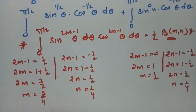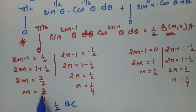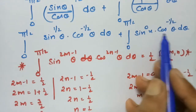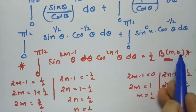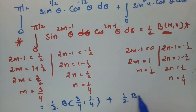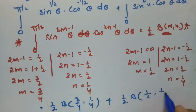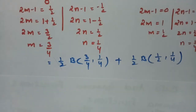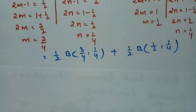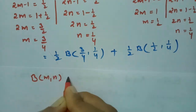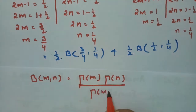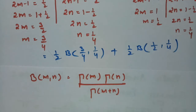Substituting into the formula, the first integral gives half times β(3/4, 1/4), and the second integral gives half times β(1/2, 1/4). Now I am going to use the important relation between the beta and gamma functions: β(m, n) = Γ(m)·Γ(n) / Γ(m+n).